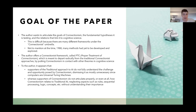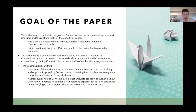The author offers his connectionist framework called the Proper Treatment of Connectionism, or PTC, which departs radically from traditional connectionist approaches by putting connectionism in contact with classical AI theories of cognitive science. To the author, supporters of traditional AI do not fully understand the challenge posed by connectionism, dismissing it as unnecessary since computers are already universal Turing machines, while supporters of connectionism don't articulate how it relates to traditional AI, neglecting aspects such as rules, sequential processing, logic, and concepts.